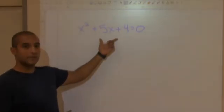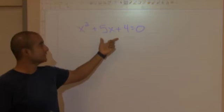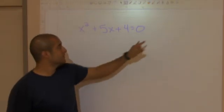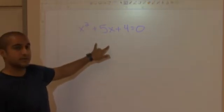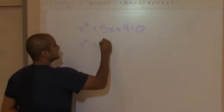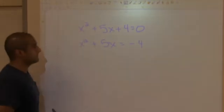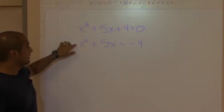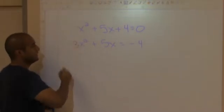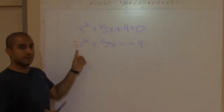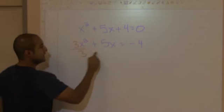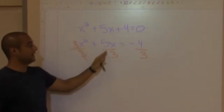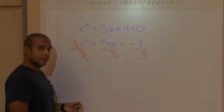I know this one can be done by factoring, but I'm going to complete the square so you can see how to do it. I'm going to move that 4 to the other side so that I can keep my x squared terms on the left side. So x squared plus 5x is equal to negative 4. That's the first step in completing the square. By the way, if there were a coefficient like 3 in front of x squared, I would divide every term by 3 to make it 1. Luckily, I don't have to do that here.